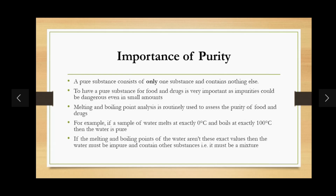When testing the boiling point of a liquid where the impurity is a dissolved solid: the pure substance will have a sharp boiling point and all the liquid will boil at a constant temperature. If it is an impure substance, the liquid will boil over a range of temperatures and it will boil at higher temperatures than the pure liquid.